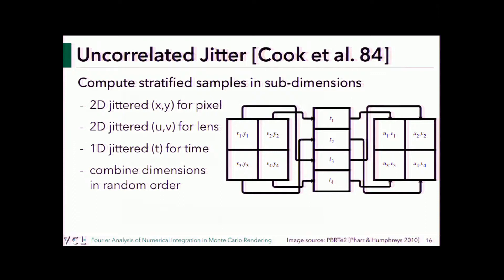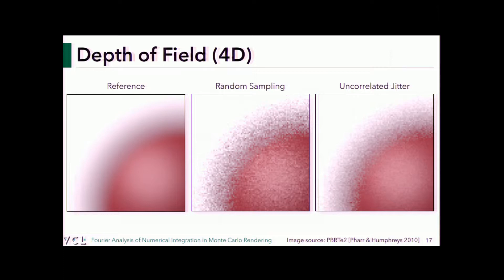With the same number of samples, this combined stratification approach produced much better results: compared to millions of samples as reference, a few random samples give visible noise, whereas this algorithm achieves similar quality with the same sample count. This was published around 1984 and the animation industry immediately became interested — it meant they could render images much faster.